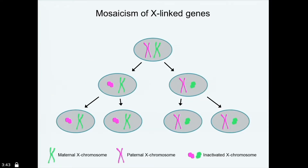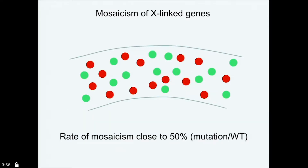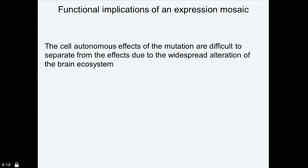So we have seen this already. The female patients have mosaicism due to the inactivation of the X chromosome. Half the cells are wild-type, half the cells are actually mutated. As far as I know, in most females roughly the rate of mutation is close to 50%, and that brings about the phenotype of the disease as we know it.